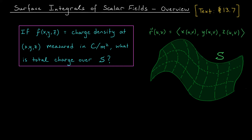Let's think about this. The charge density function might be different at every point over this surface. So rather than considering the whole surface at once, let's restrict our attention to just one of these tiny little patches. Over this small patch, the charge density function will likely be roughly constant — we assume it varies continuously and won't change dramatically over this tiny little area. So we're going to assume that throughout this patch, the charge density is roughly equal to the charge density at a point r(u_i, v_j).